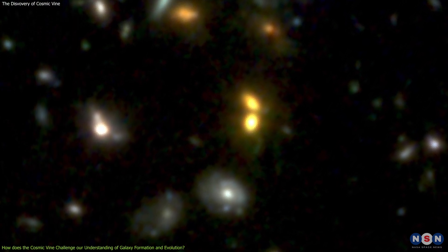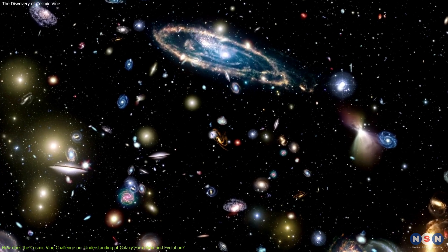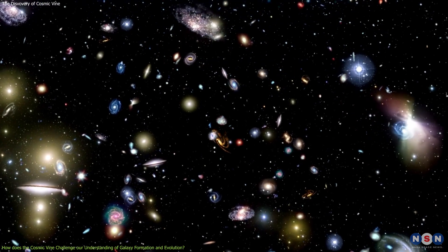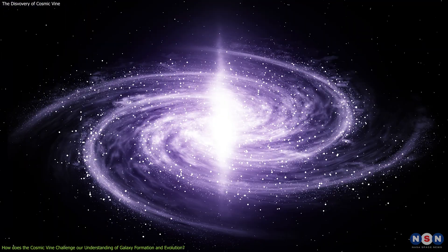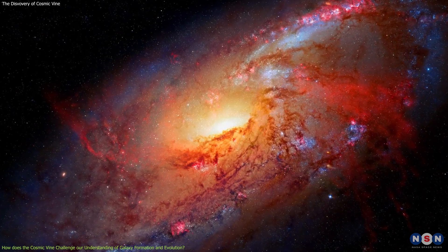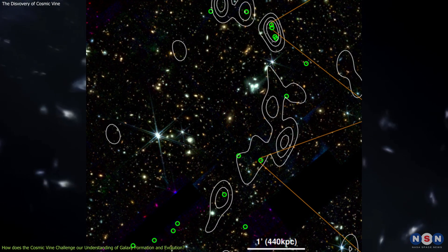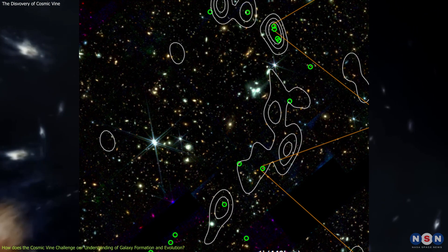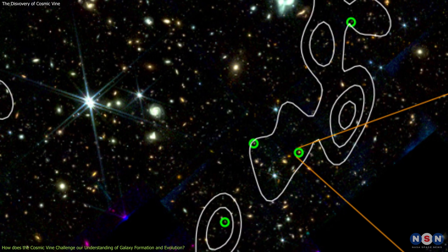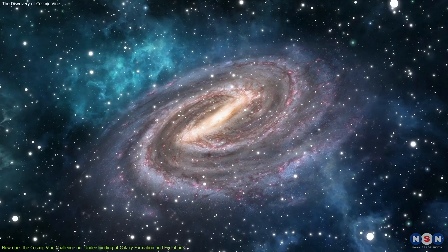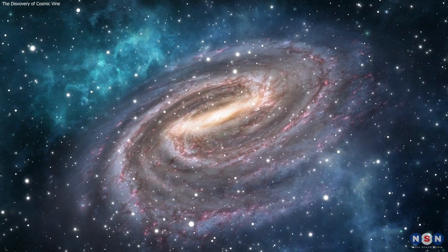However, the galaxies in the cosmic vine are very heterogeneous and complex, showing a wide range of masses, star formation rates, dust contents, and morphologies. How did the galaxies in the cosmic vine acquire such diversity and complexity in the early universe? These are some of the questions that the cosmic vine raises, and that the astronomers hope to answer with more observations and simulations.